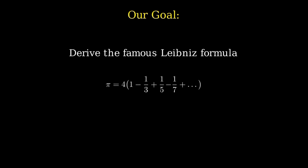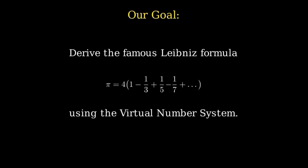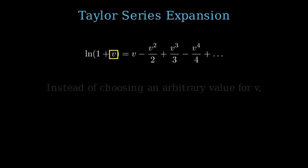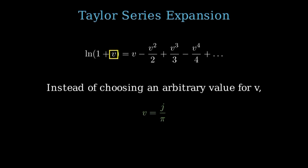By redefining exponentials and logarithms, we will naturally arrive at a beautiful infinite series for pi. We begin with a well-known mathematical series: the Taylor series expansion for the natural logarithm of 1 plus v. The natural logarithm of 1 plus v equals v minus v squared over 2 plus v cubed over 3 minus v to the 4th over 4, and so on. This series plays a crucial role in mathematical analysis. Now, instead of choosing an arbitrary value for v, we will set v equal to j divided by pi.